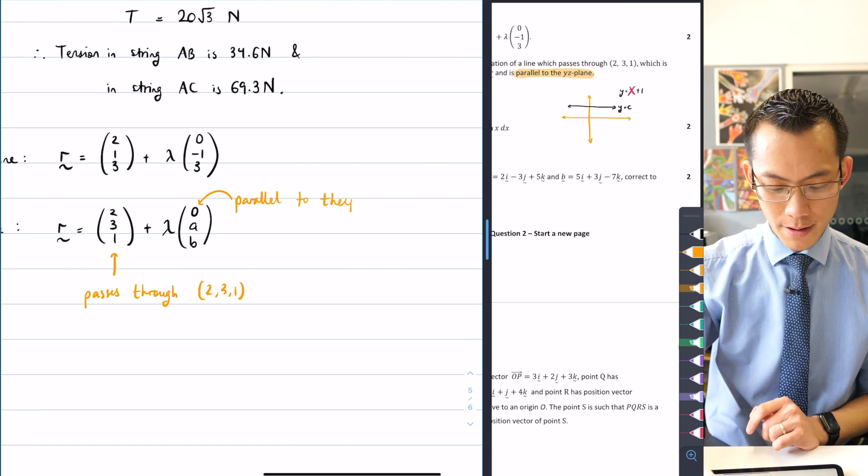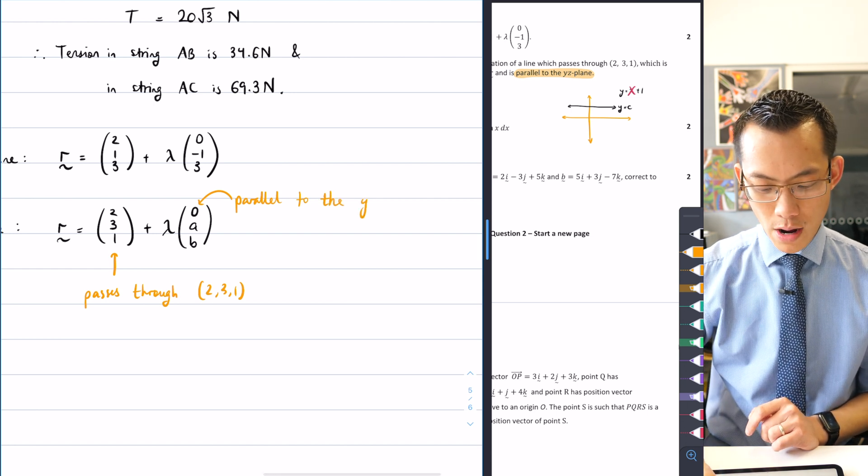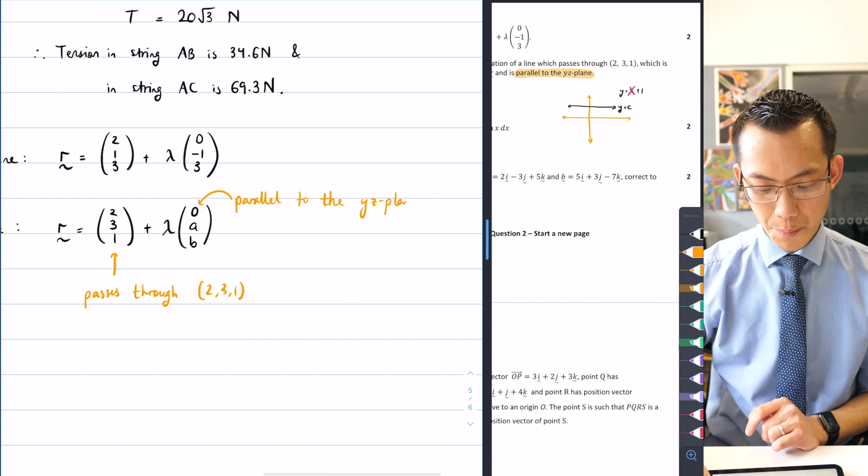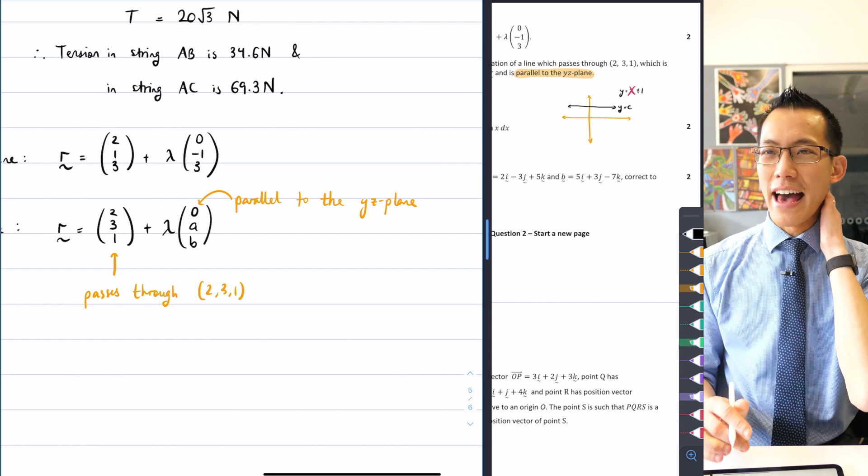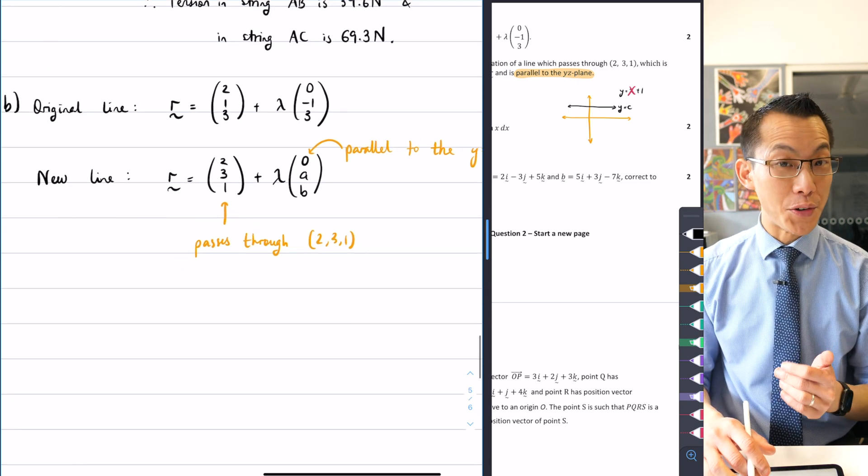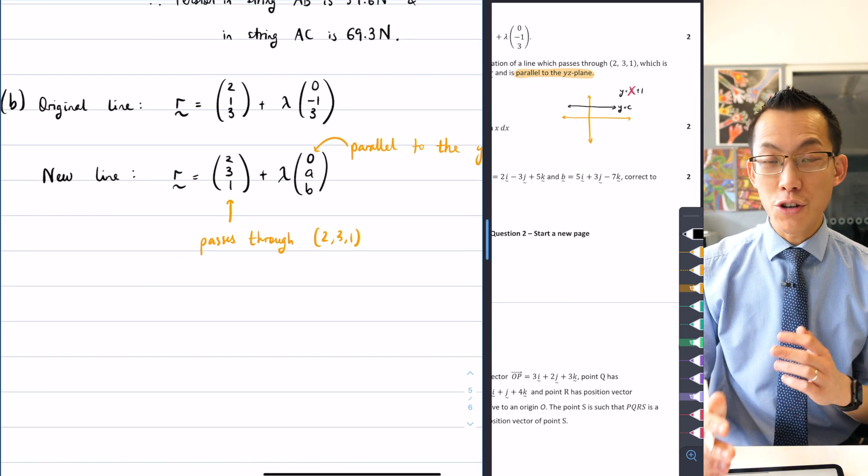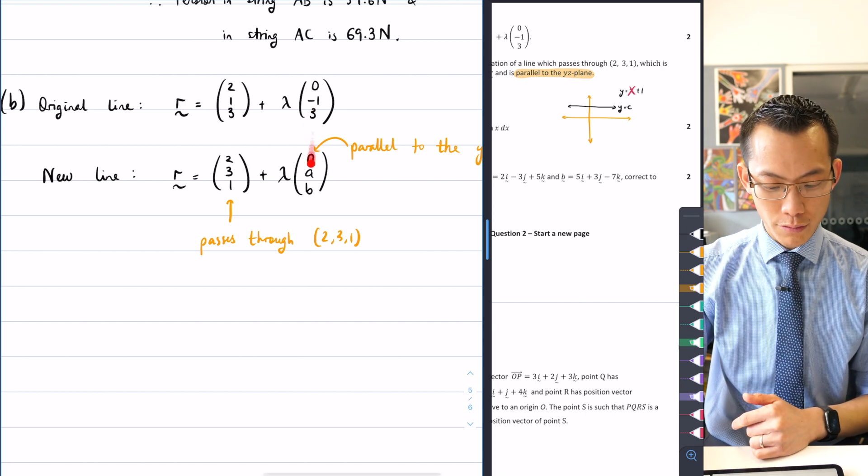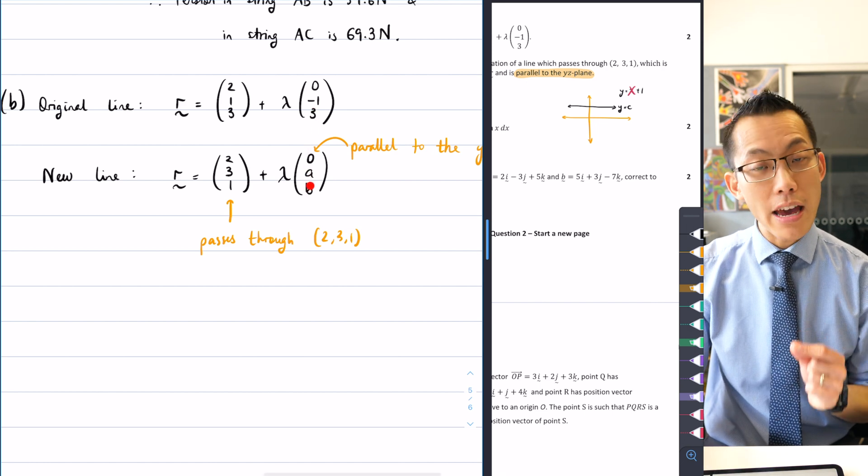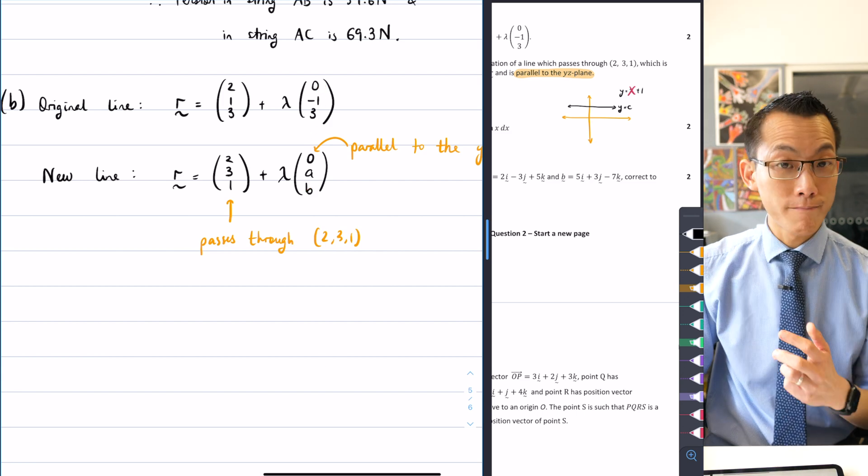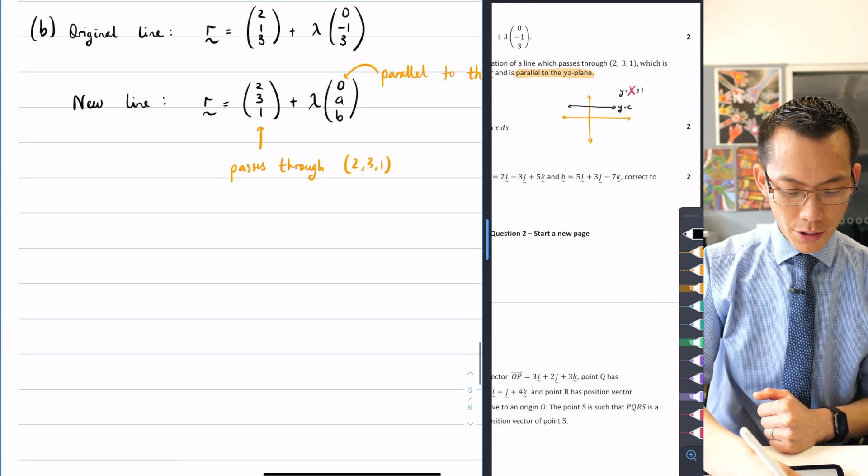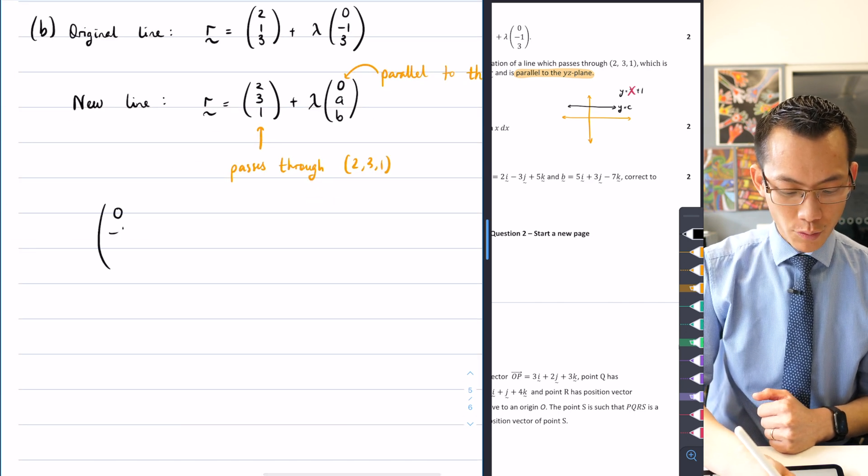So this is my new line. So it passes through, this part here, passes through the particular coordinates I need, 2, 3, 1, and then this part here tells me I'm parallel to the YZ plane. Okay, excellent. Now I'm ready to go. I can actually do that computation that I was mentioning before about the dot product.